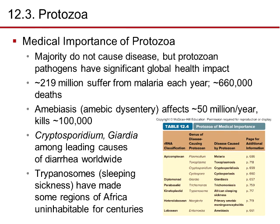The medical importance of protozoa: the majority do not cause disease, but protozoan pathogens have significant global health impact. There are 209 million people who suffer from malaria each year, with about 660,000 deaths annually. Malaria could potentially be reduced significantly by spending just $10 per person in Africa to buy a mosquito net, since most malaria-carrying mosquitoes bite at night. Amoebiasis affects about 50 million people a year. Cryptosporidium and Giardia are among the leading causes of diarrhea in the world, and trypanosomes have made some regions of Africa uninhabitable for centuries.